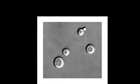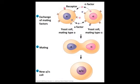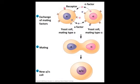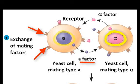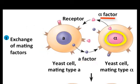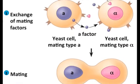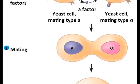Yeasts — my very favorite fungus — show intercellular communication when they prepare to mate. There are, of course, two sexes of yeasts: alpha and beta. Alpha cells secrete alpha factor and have beta receptors on their surface. Beta cells secrete beta factor and have alpha receptors on their surface. This is all they go by to find each other.